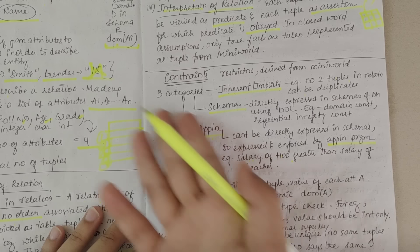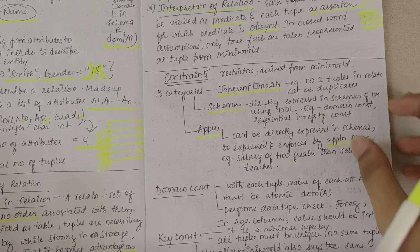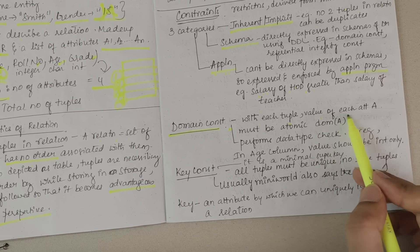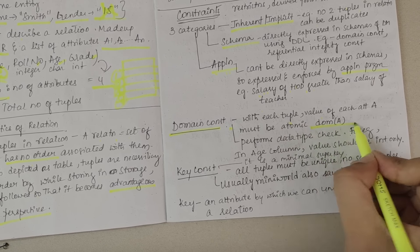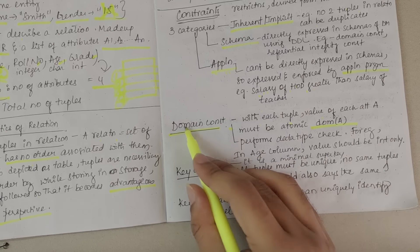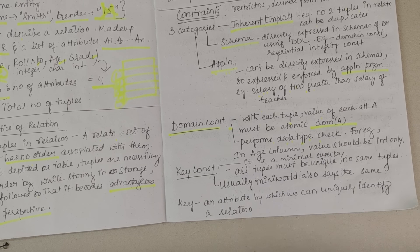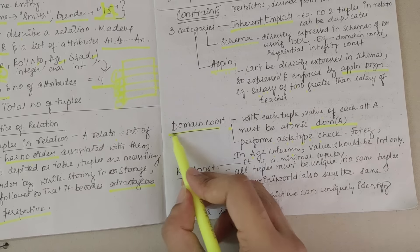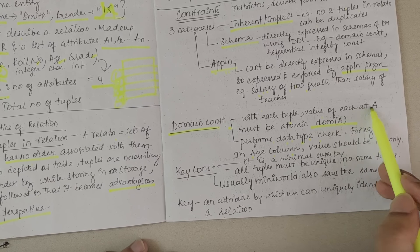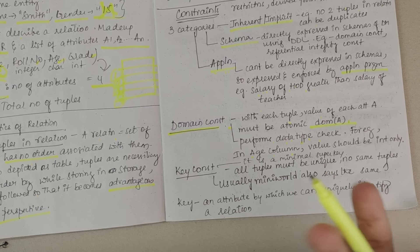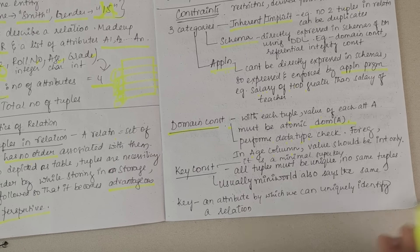Application constraints cannot be directly expressed in the schema, so they are expressed using application programs. For example, the salary of a HOD should always be greater than the salary of a teacher. Then we have domain constraints — with each tuple, the value of each attribute must be atomic. Domain constraint also performs data type checking: for example, in the age column, the value should be integer only.